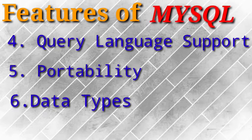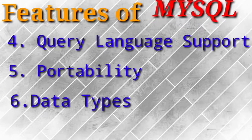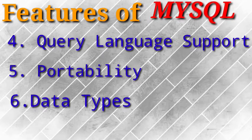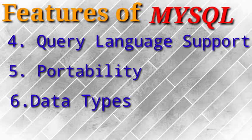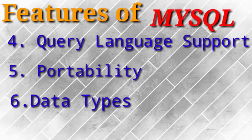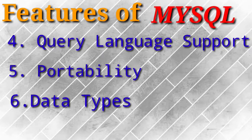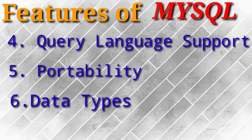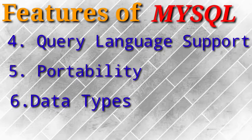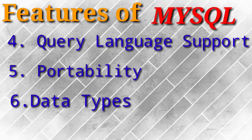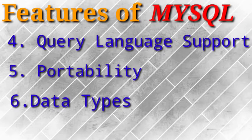The sixth key feature is data types. MySQL can store different kinds of data, as it provides a variety of data types. It also supports both fixed-length and variable-length records. We will be discussing fixed-length and variable-length records in more detail in the coming videos.